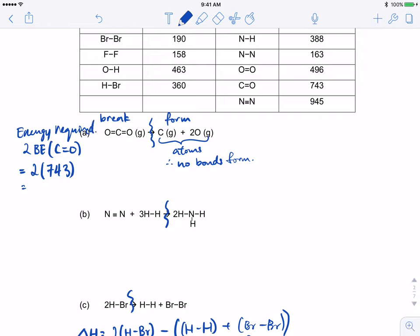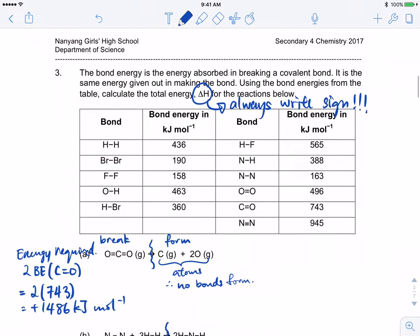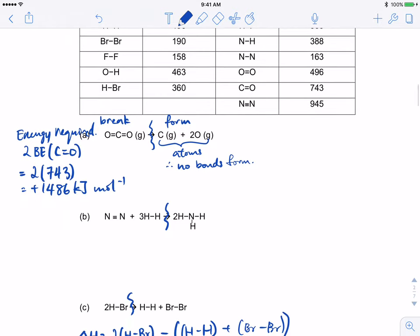We only need to calculate the energy required to break bonds. Your answer will be 2 times 743, which is 1486 kilojoules per mole. Delta H equals to 1486 kilojoules per mole.